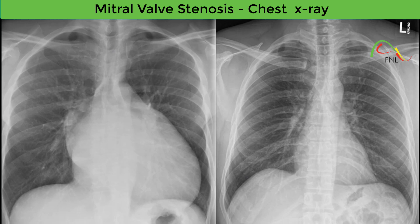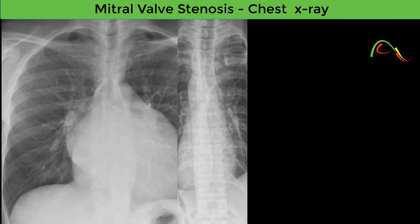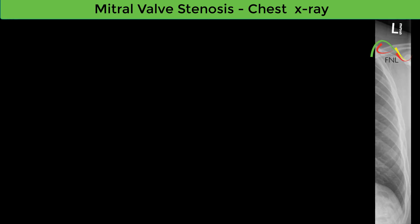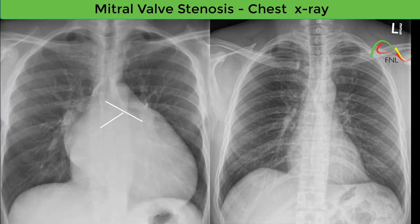The double density sign almost always represents an enlarged left atrium, although a similar appearance can sometimes be caused by the right superior pulmonary vein in some patients even without left atrial enlargement. If the double density sign is present, the oblique left atrial measurement can be taken from the midpoint of the left main bronchus to the right border of the left atrium — sometimes called the left atrial diameter. A measurement of over 6 centimetres confirms left atrial enlargement.